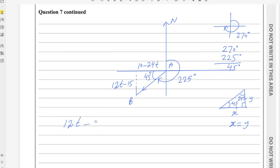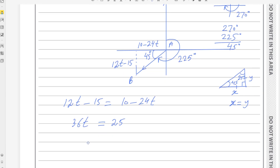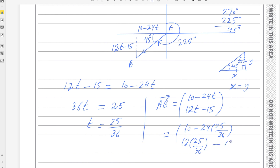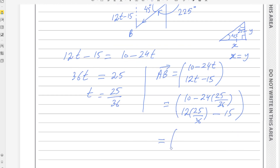Setting 12t − 15 = 10 − 24t: adding 24t to both sides gives 36t, and moving 15 to the right gives 36t = 25, so t = 25/36. Substituting back into the i-component: 10 − 24 × (25/36) = −20/3. The j-component 12 × (25/36) − 15 = −20/3 as well, confirming both components are equal.